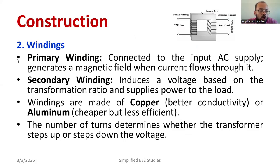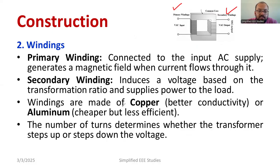If I talk about the winding, we use copper winding. The windings are connected to the primary side and the secondary side, which is very clear. Usually, windings are made up of copper, which gives better conductivity. You can also use aluminum.